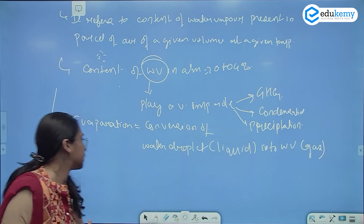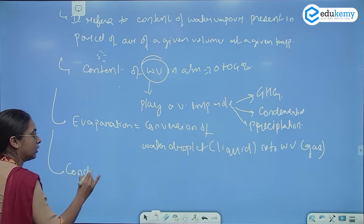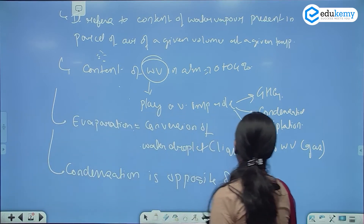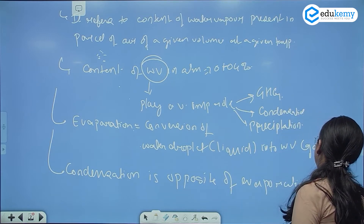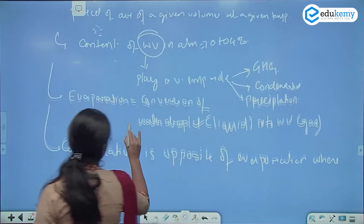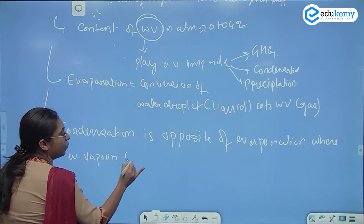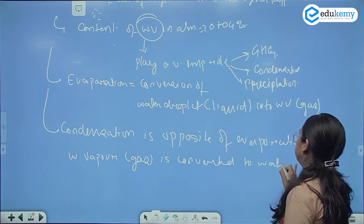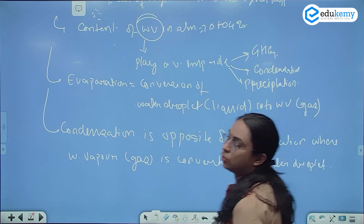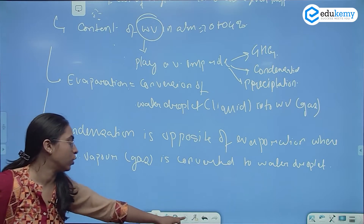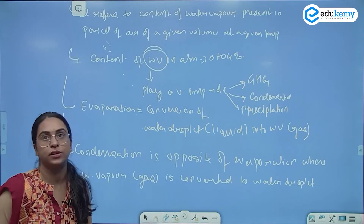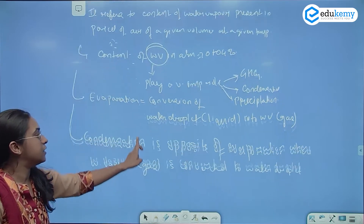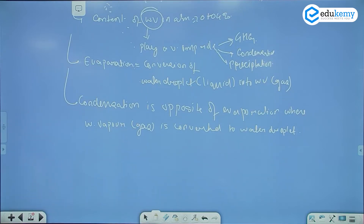Condensation is the opposite of evaporation, wherein water vapor, which is a gas, is converted into a water droplet. So water vapor is converted to your water droplet — that is condensation. It is opposite of evaporation. Condensation is opposite of evaporation, where the water vapor which is a gas is converted into a water droplet.